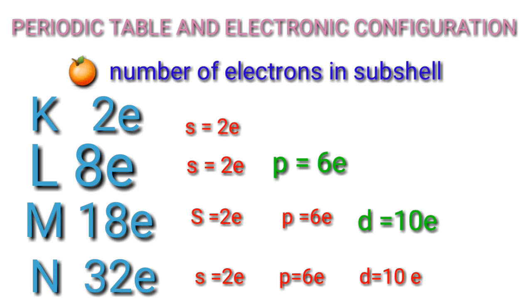The 4th shell has subshells S, P, D, F. S has 2 electrons, P has 6 electrons — L — and D has 10 electrons. And then total is 18 electrons filled.